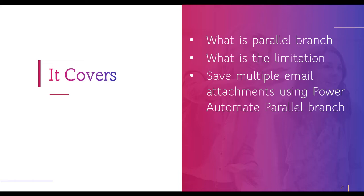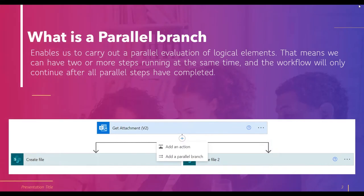So what is a parallel branch? It enables us to carry out a parallel execution of logical elements. That means we can have two or more steps running at the same time, and the workflow will only continue after all parallel steps are completed. In 2017, Microsoft announced the parallel branch feature.